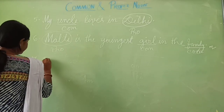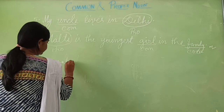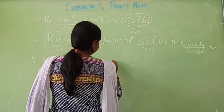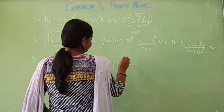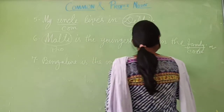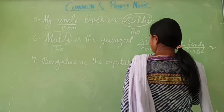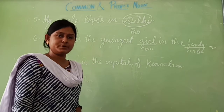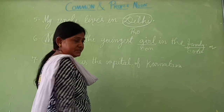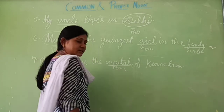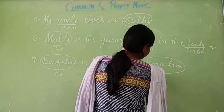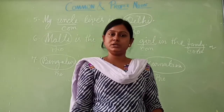The last sentence: Bengaluru is the capital of Karnataka. Bengaluru is the special name of a place, so Bengaluru is a proper noun. Capital is a common name. Karnataka is also a special name of a place, so it is also a proper noun. In this way, do it in your copy.